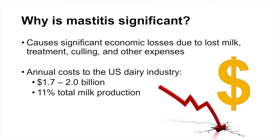Why do we care so much within our industry about mastitis? Because mastitis is not only going to be a welfare issue for the animal — we want to keep our animals healthy so they continue to produce milk — but we also have an economic concern. Economic losses include loss of milk production, since this milk is no longer able to be sold for human consumption, as well as treatment costs such as antibiotics and veterinary expenses, and animals that have consistently come down with mastitis are oftentimes culled from the herd.